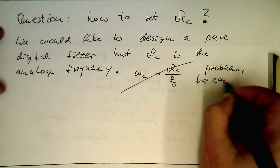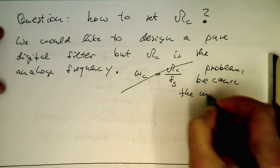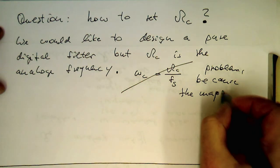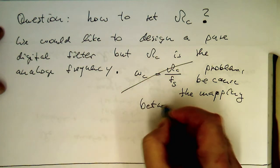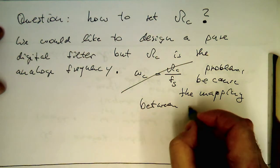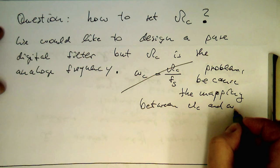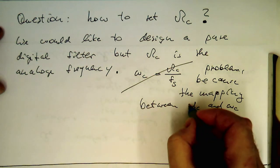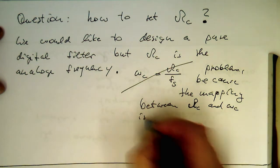Because the mapping between omega_c and omega_c—small omega_c, that's our capital omega_c—is non-linear.